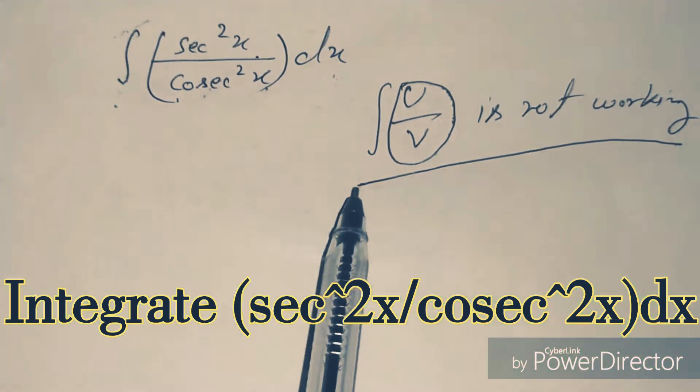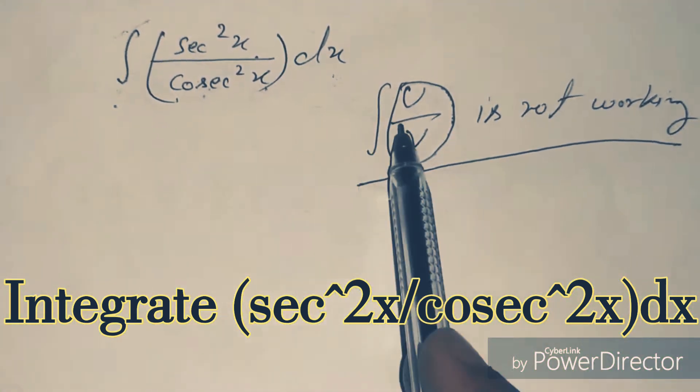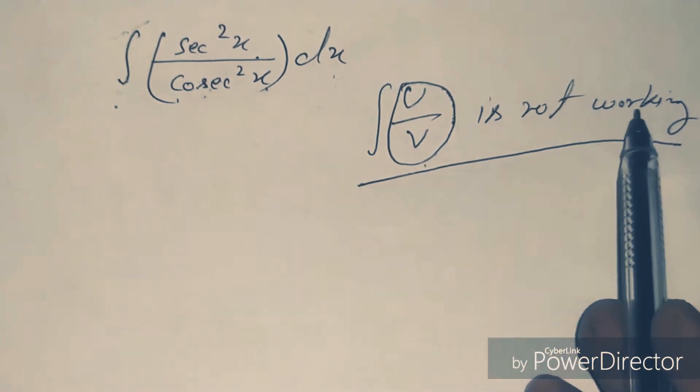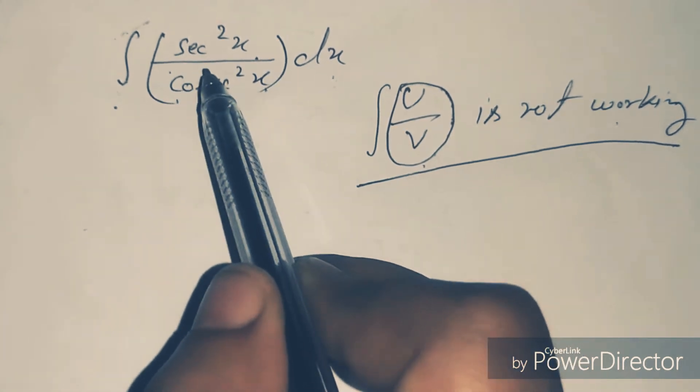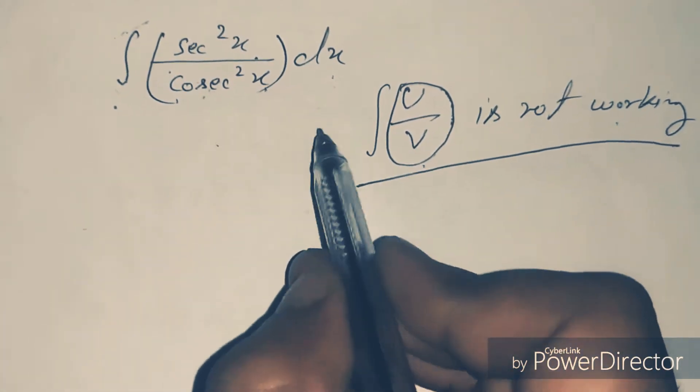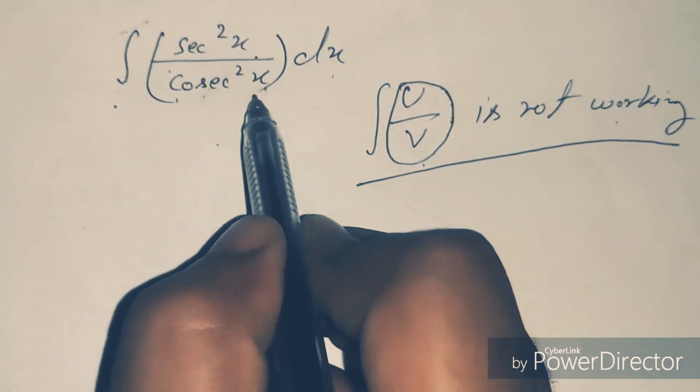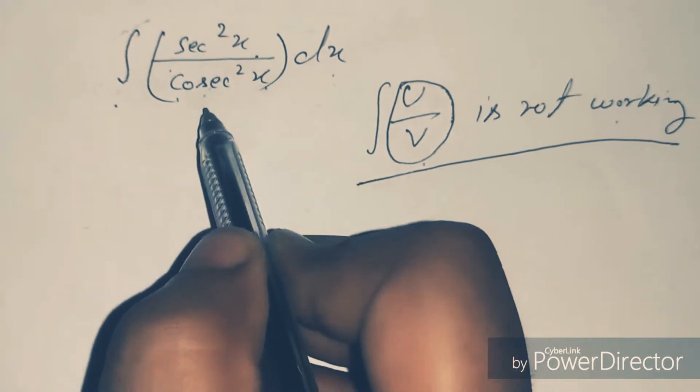First of all, I want to say the integration u by v method is not working. So in every question, I remove the denominator function by solving the equation, then there is also u by v method denominator and numerator.